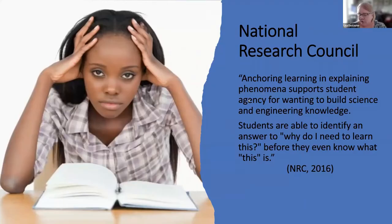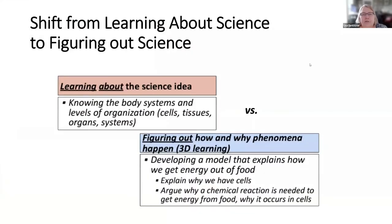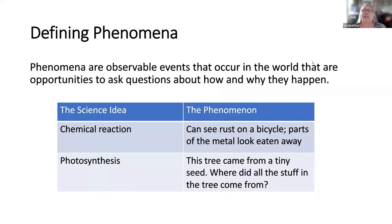I found this quote from National Research Council that I wanted to start with that says, anchoring learning and explaining phenomena support student agency for wanting to build science and engineering knowledge. Students are able to identify an answer to why do I need to learn this before they even know what this is. So the idea is to make a shift from learning about science, like learning facts, to figuring out how something works or why something happens.